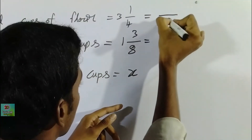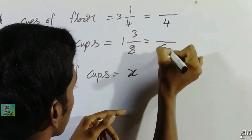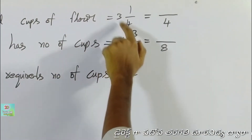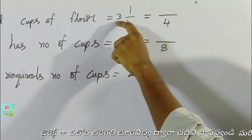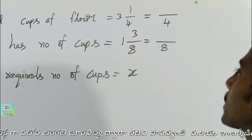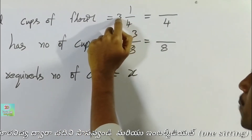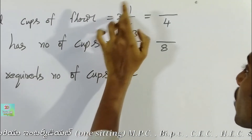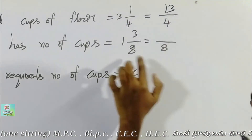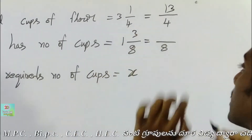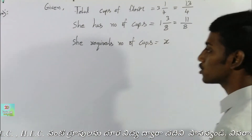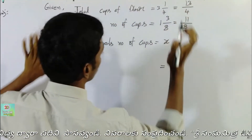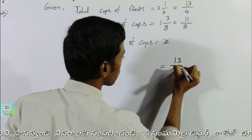First, look at the denominator. We need to find the LCM of 4 and 8. We multiply: 4 times something, giving us 12. After that, the total required cups is 13/4. Converting 3 and 1/4 to an improper fraction: 3×4 + 1 = 13, so 13/4.